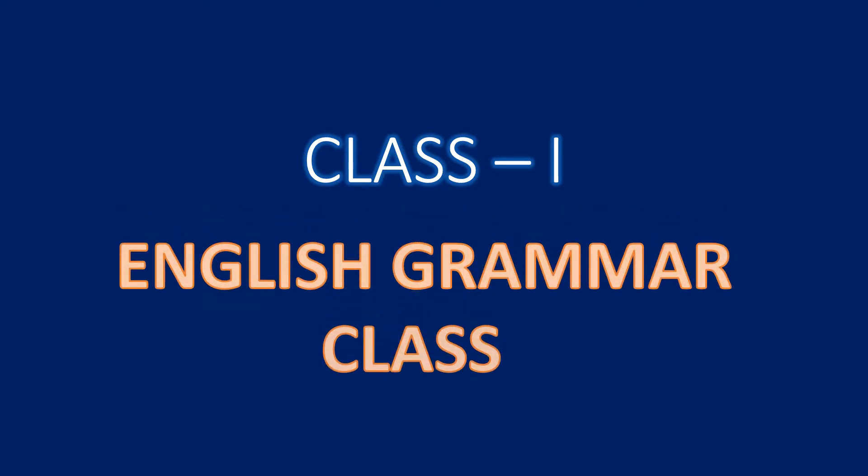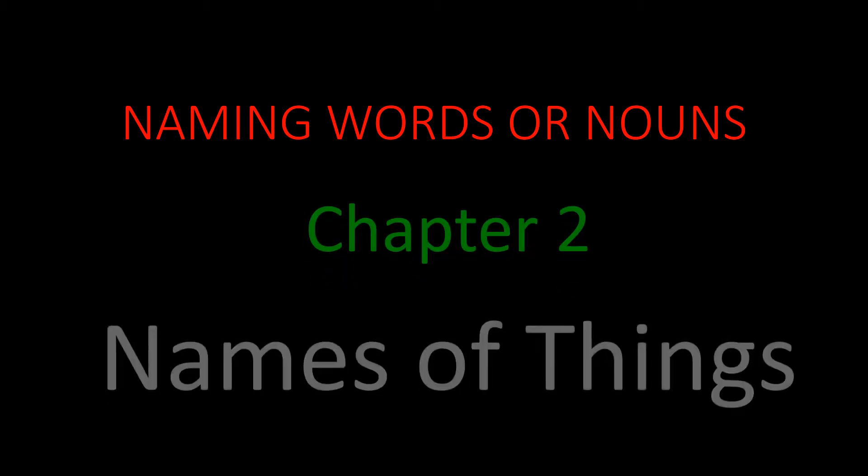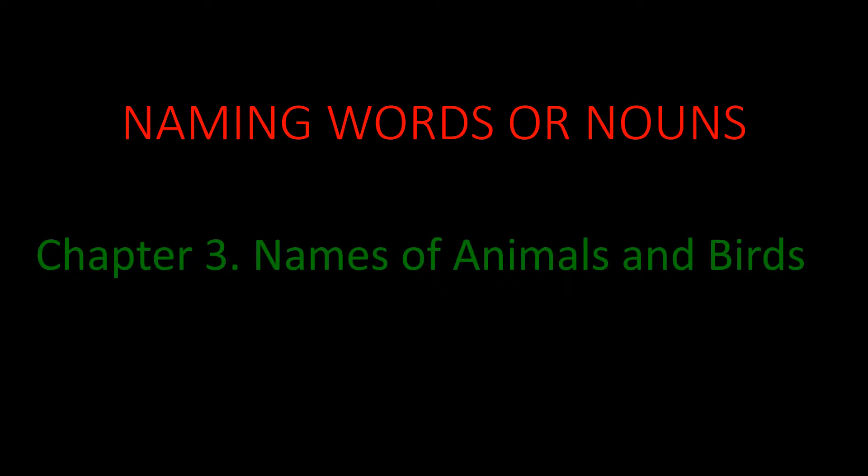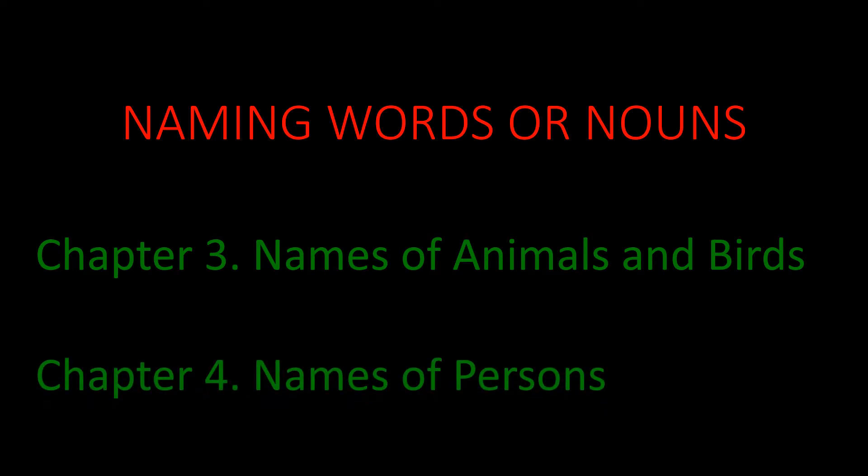Welcome, Class 1 students, to your English grammar class. Yesterday we had started our topic naming words or nouns, and under that we had learnt chapter 2, names of things. Today, under the topic naming words or nouns, we are going to learn chapter 3, names of animals and birds, and chapter 4, names of persons.